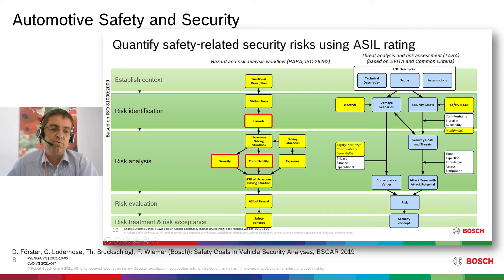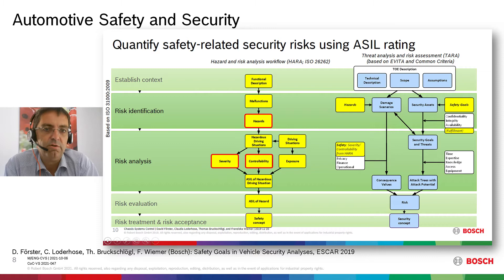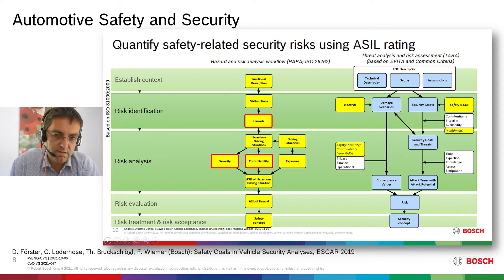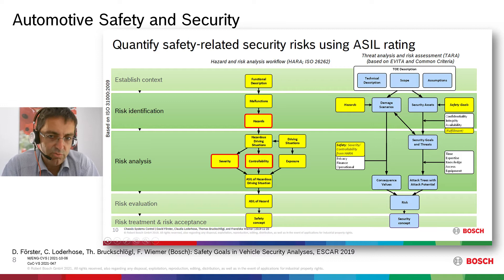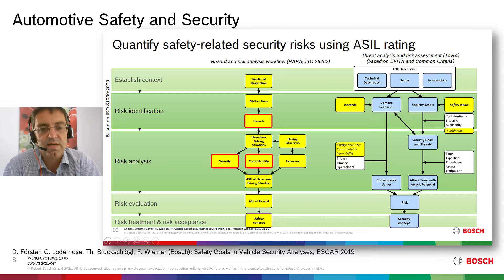There is a solution we published in 2019 in a SAR paper showing how you could use it. In the middle you see the flow of the hazard analysis and risk assessment, with severity, controllability, and the hazards. On the right you see the threat analysis and risk assessment — the TARA. You can see how information from the safety HARA on the left can be used in the security TARA on the right, giving a possibility to evaluate the safety risk of an intended manipulation without using ASIL — because you don't have statistical independence.